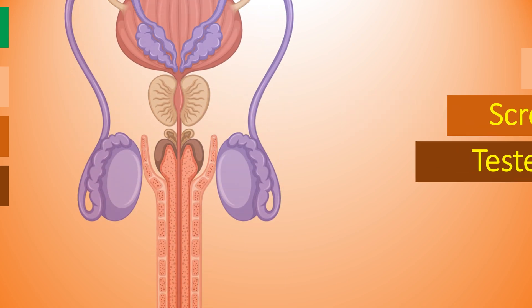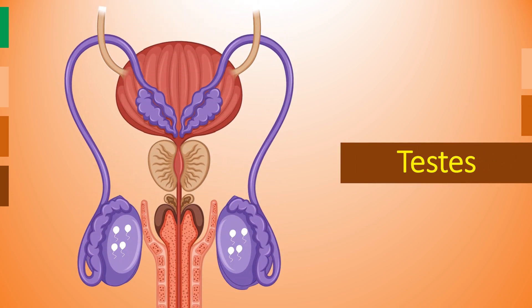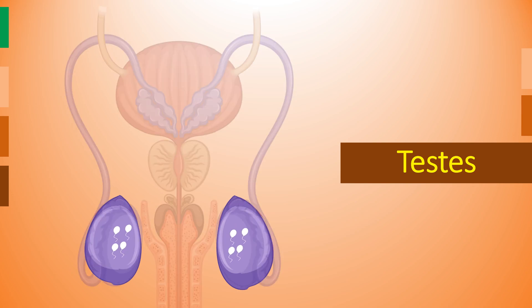Now the testes. Testes are paired organs and are oval in shape. They are located in the scrotal sac and measure about four to five centimeters in length. The left testis is slightly lower than the right testis, which prevents them from rubbing.